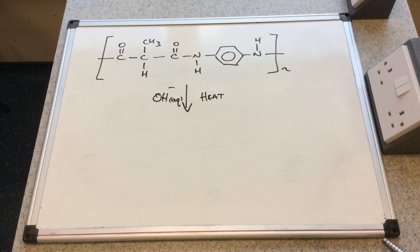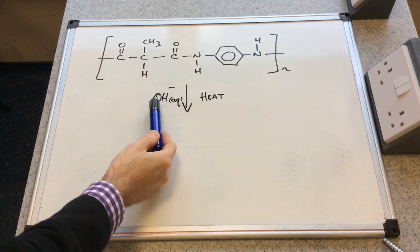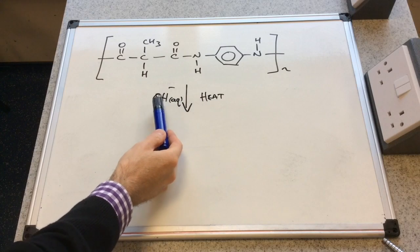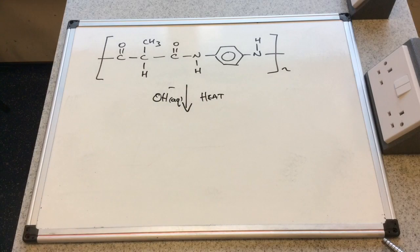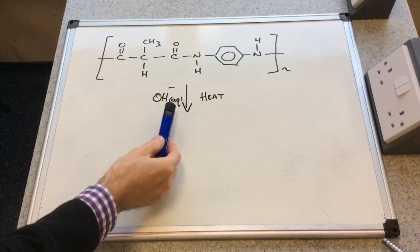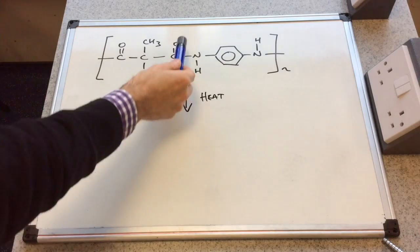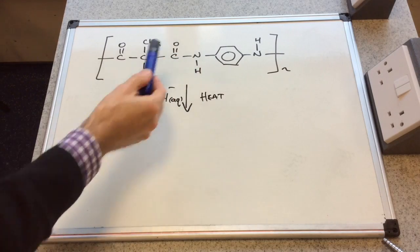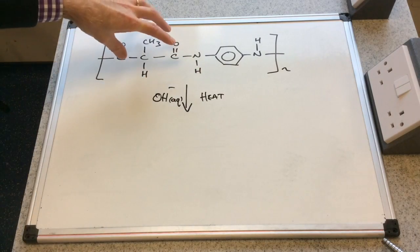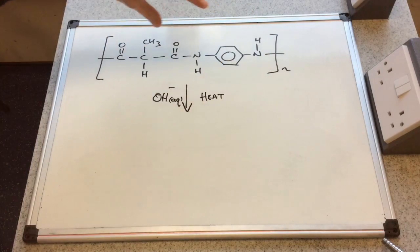So we're just going to take the exact same polyamide now and we're going to do the alkaline hydrolysis. So all I've done is I've changed the conditions now to hot aqueous hydroxide ions. So again the water, the aqueous, will break the same bond, the C single bond N, and we're going to draw up the two separate parts to the polymer.